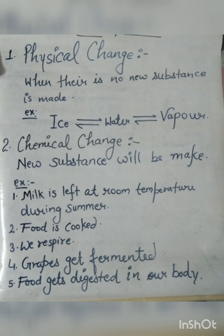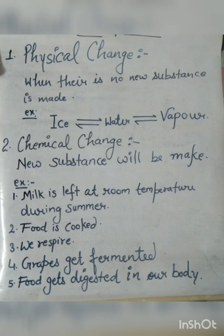Chemical Change: when a new substance is made. For example, making tea, milk left at room temperature during summer, respiration, grapes getting fermented, and food getting digested in our body.